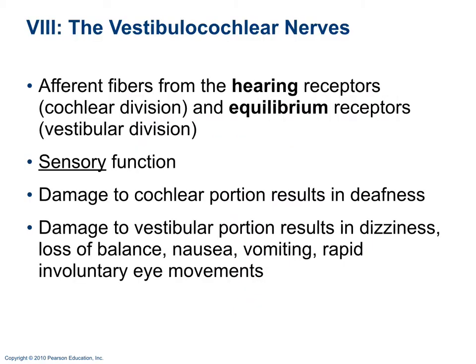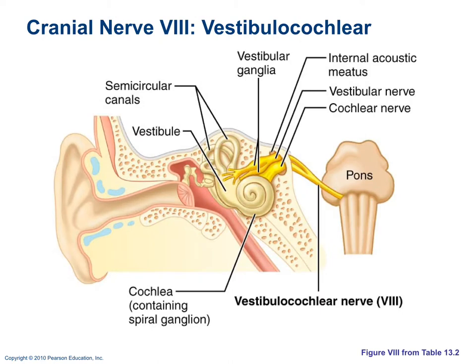Cranial nerve 8 is the vestibulocochlear nerve — sensory — with two parts: the cochlear division responsible for hearing, and the vestibular division responsible for equilibrium. Damage to the cochlear portion results in hearing loss or deafness. Damage to the vestibular portion can cause dizziness, loss of balance, vomiting, nausea, and rapid eye movements.